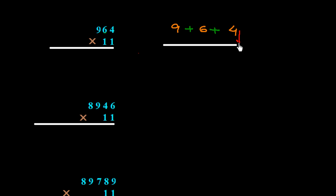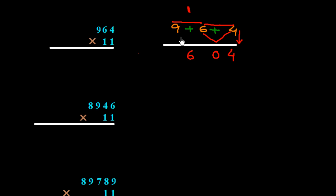First we write down 4, then add 6 plus 4 equals 10, so we put 0 and carry 1. Then 9 plus 6 is 15, plus 1 carry is 16, so we put 6 and carry 1. Finally 1 plus 9 gives us 10, so the answer is 10604.